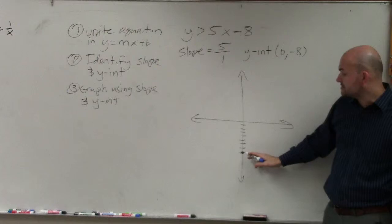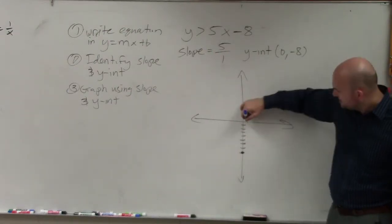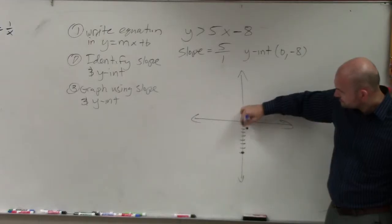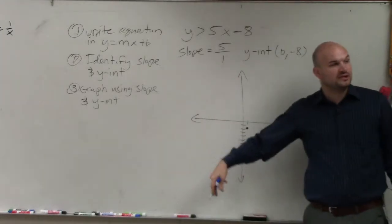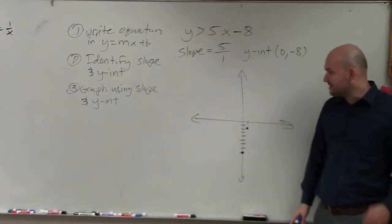So from my y-intercept, rise over run, I'm going to go up 5. 1, 2, 3, 4, 5. Then to the right one. We could go down 5 and to the left, but you guys can see that's going to take us off the graph. So I'm not going to do that in this case.